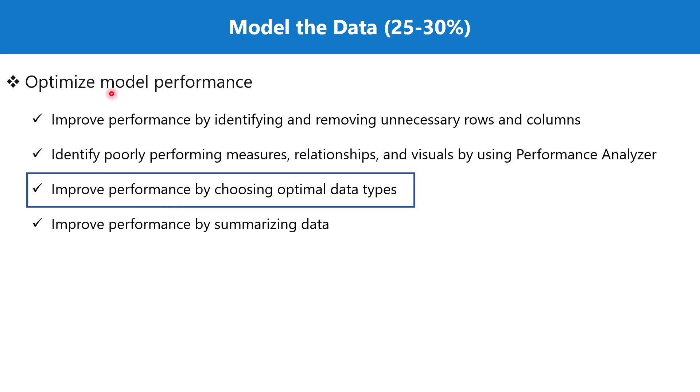In the previous videos we have talked about the data modeling aspect in a lot of detail. We have explored what is a data model, what are relationships, what is cross filter direction, what is cardinality related to the tables, and what is cardinality related to the columns — all of the critical aspects related to a data model we have already discussed.